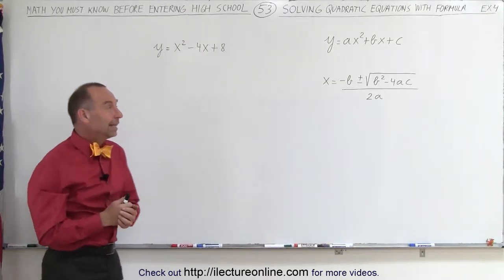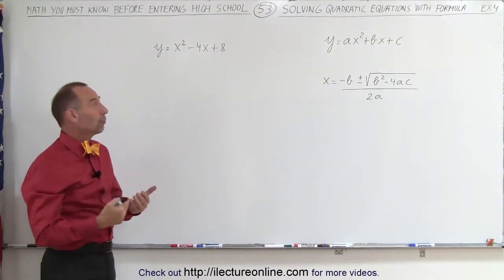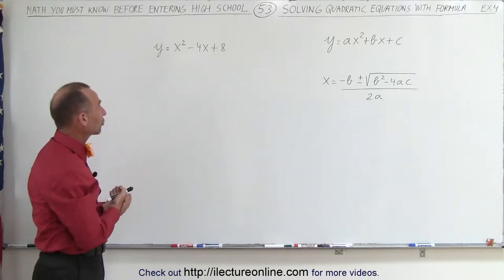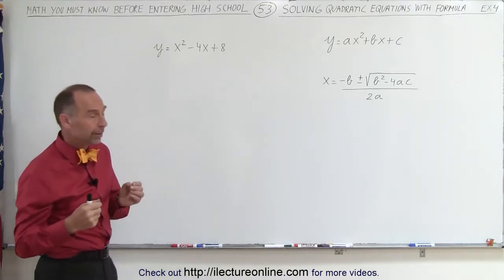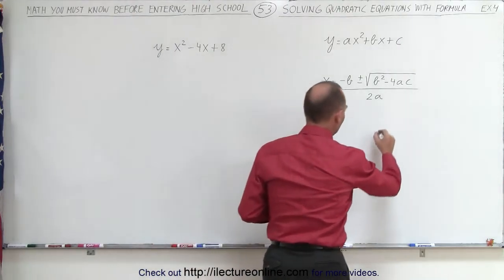Welcome to ElectronLine. In this example, we're trying to solve the quadratic equation y equals x squared minus 4x plus 8, which means we're looking for the places where the graph crosses the x-axis.